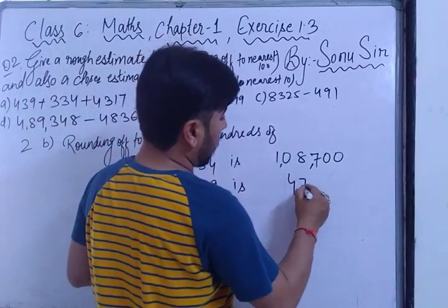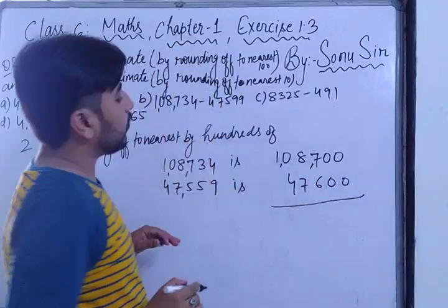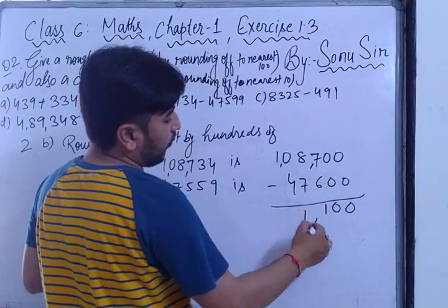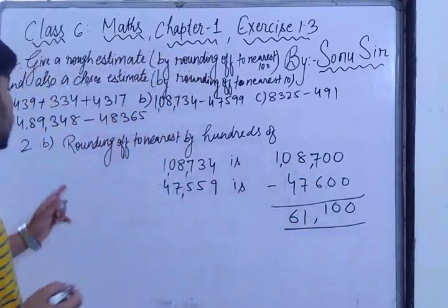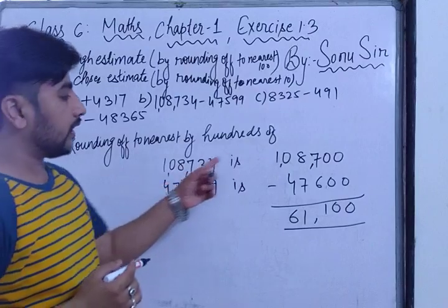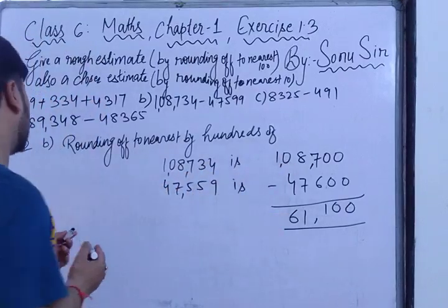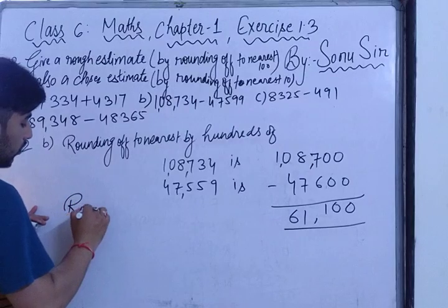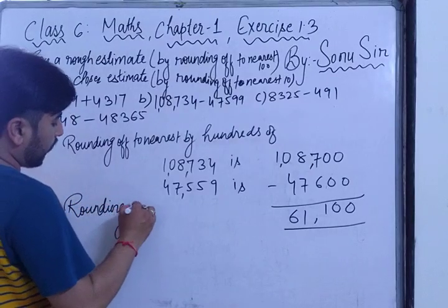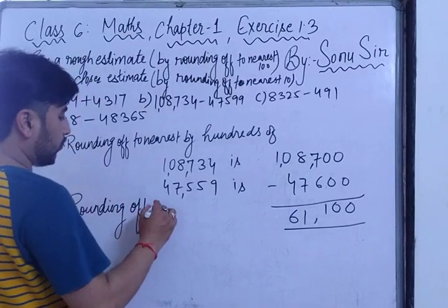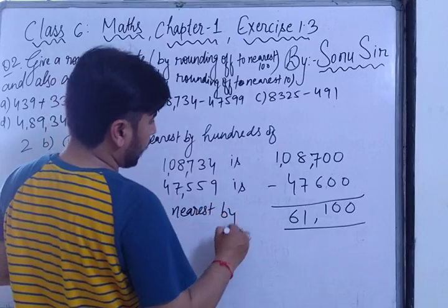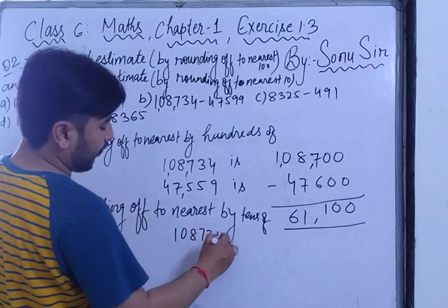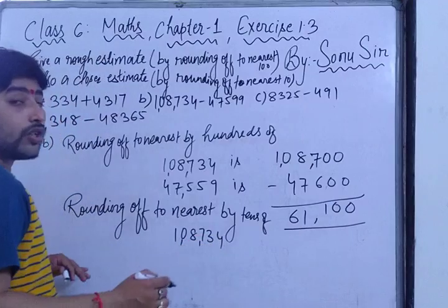We have to subtract: 108700 minus 47600. The answer is 61100.